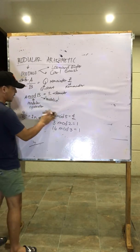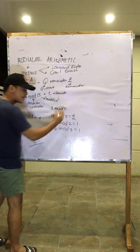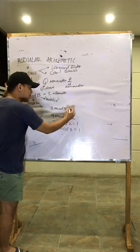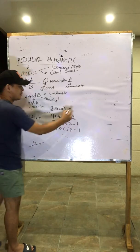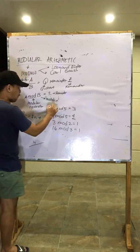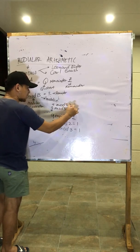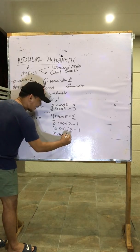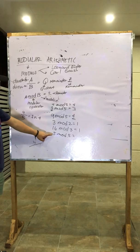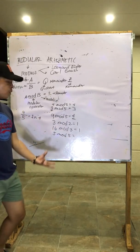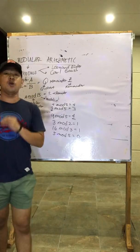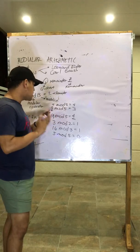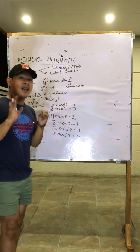What if we have 3 mod 5? Since our dividend is less than our divisor or modulus, the result will be our dividend — that will be the remainder. For 4 mod 5, the result is also equal to 4. And for 5 mod 5, the dividend and divisor are the same or equal; therefore, the remainder is always zero.